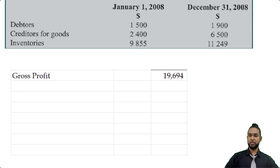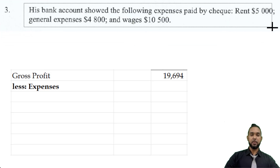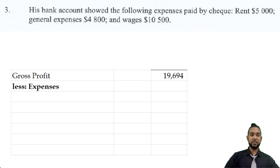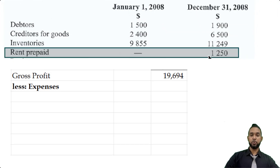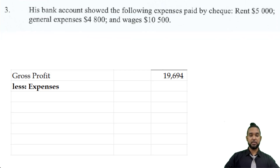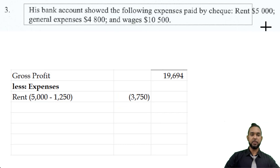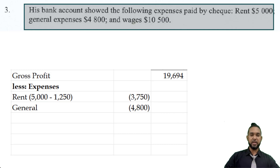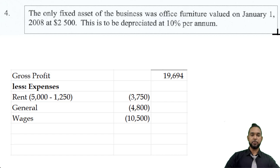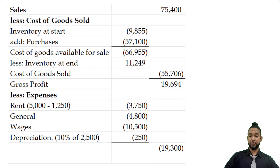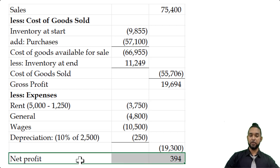There were no other revenues, so we go straight to expenses. Rent paid was $5,000, but there's a closing prepayment, so we subtract $1,250 to get rent expense of $3,750. General expenses $4,800, wages $10,500, and depreciation on the office furniture at 10% of $2,500 is $250. Total expenses subtotal to $19,300. Subtracting from gross profit of $19,694 leaves a very small net profit of $394. That's it for this question.